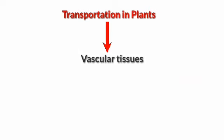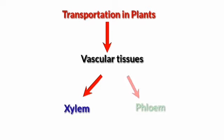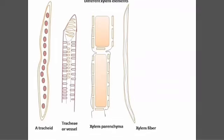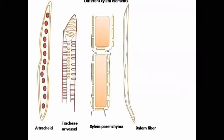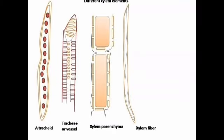The whole process is achieved by the vascular tissue in the plants, that is xylem and phloem. Let's begin with transportation of water and minerals by xylem.